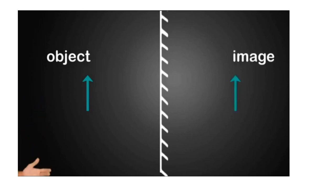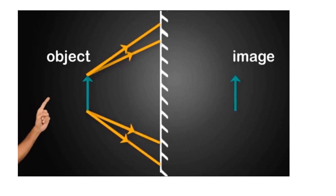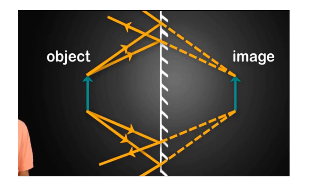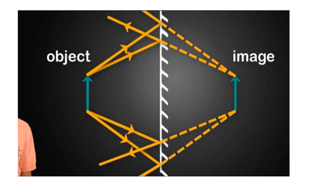For image formation on a plane mirror, the easy method is to first draw the image and then determine the light rays. You can indicate the incident ray and then the reflected rays. Since you know the properties of the image formed by a plane mirror, you first decide the place of image formation and then continue the ray diagram.